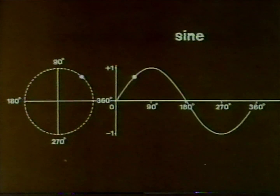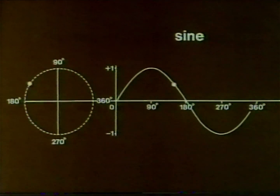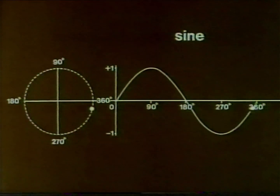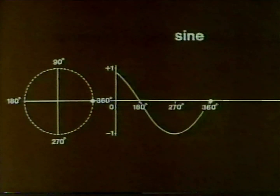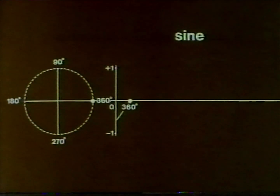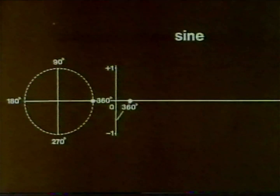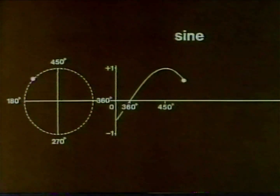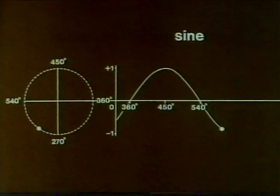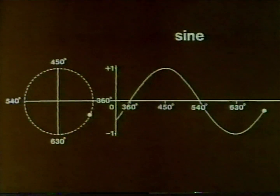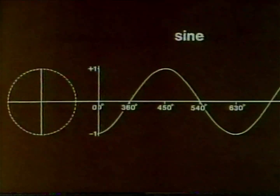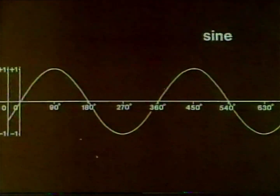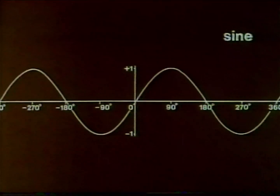The point tracing the graph keeps at the same height as the point on the circle. We needn't stop at one revolution. The graph continues to the right and repeats itself every 360 degrees. It also continues to the left for negative angles.